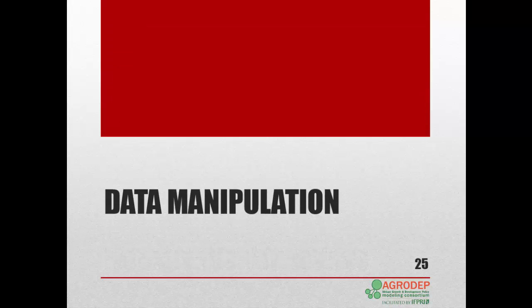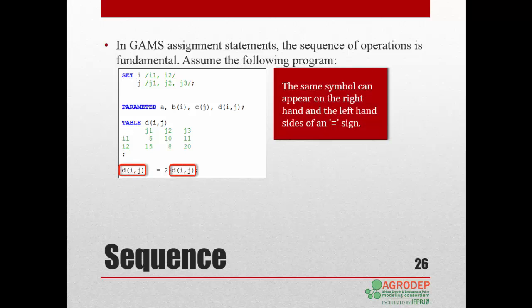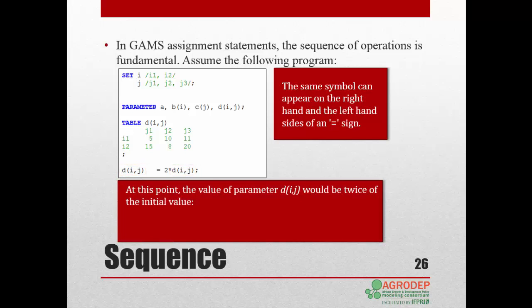Next, we review data manipulation in GAMS. In GAMS, the sequence of operations is fundamental in assignment statement. Let's take as an example the following program. The same symbol can appear on the right-hand side and the left-hand side of an equal sign. At this point, the value of the parameter dij would be twice its initial value.